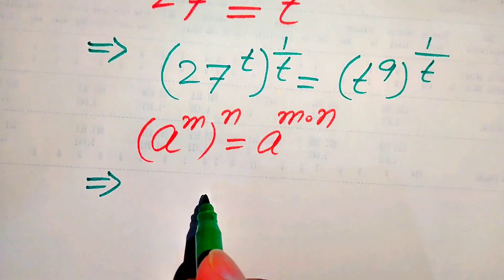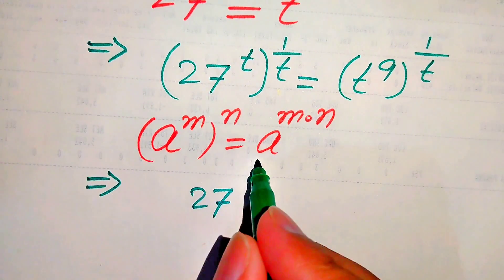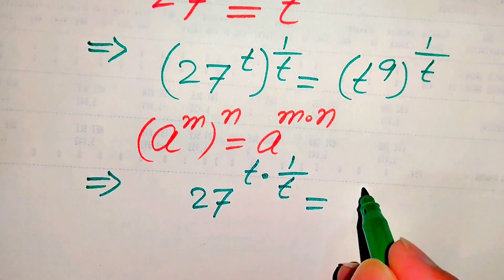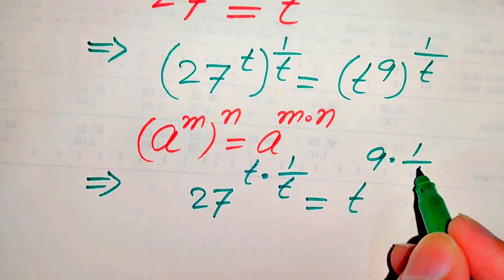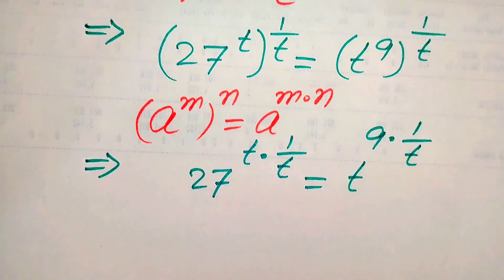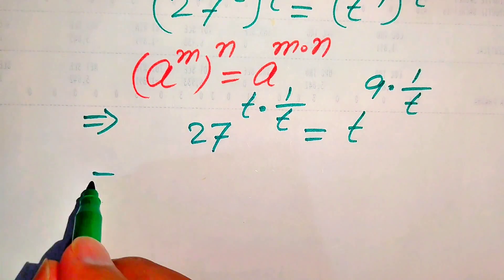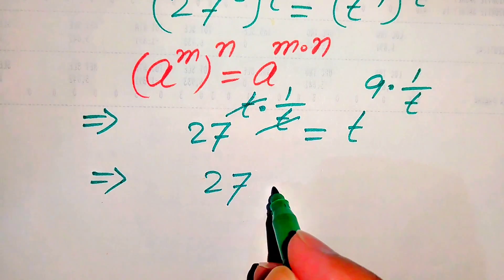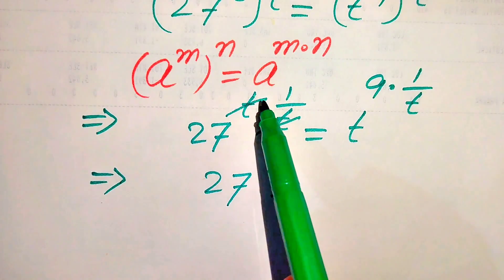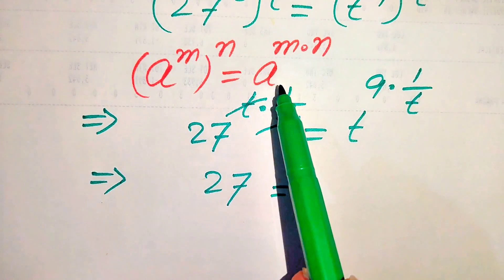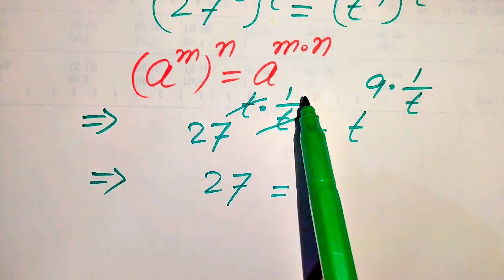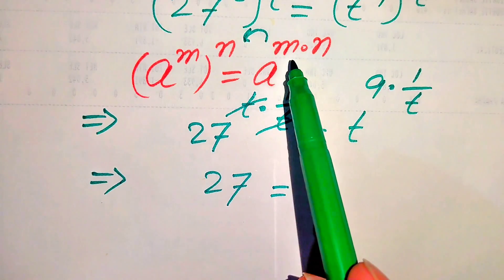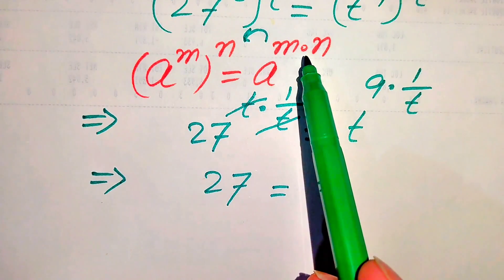According to this exponent law, we multiply the two exponents on each side. So we write 27 to the power of t times 1 over t, equals t to the power of 9 times 1 over t. In the next step, this t and this t cancel, and we get 27 equals. On the right hand side, in the exponent, we multiply these two terms.